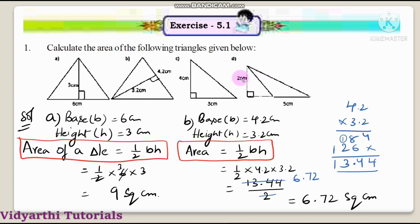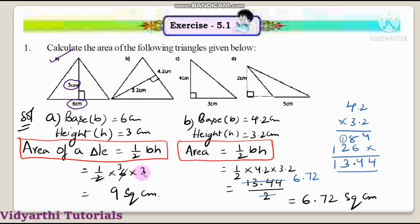Look at the first question, children: Calculate the area of the following triangles given below. For figure A, the base is 6 centimetres and height is 3 centimetres. Area of the triangle = ½ × base × height = ½ × 6 × 3 = 9 square centimetres.